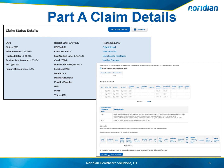The claim adjustment reason code with a narrative will provide information on any claim denials. If there was an ADR sent on this claim, the information for that ADR will display as well.